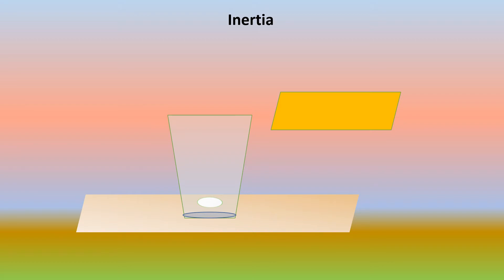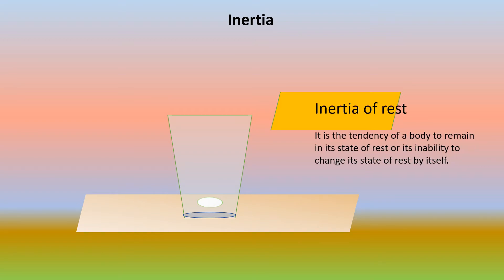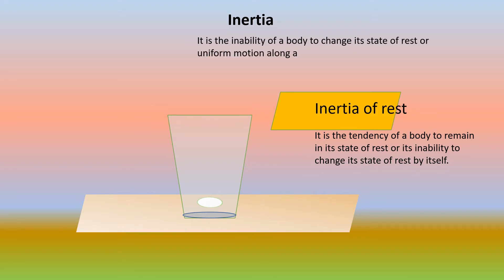So what is inertia of rest? It is the tendency of a body to remain in its state of rest, or its inability to change its state of rest by itself. And what is inertia? It is the inability of a body to change its state of rest or uniform motion along a straight line by itself.